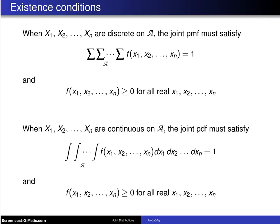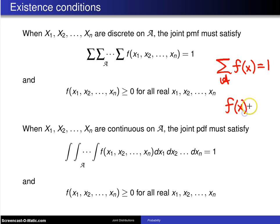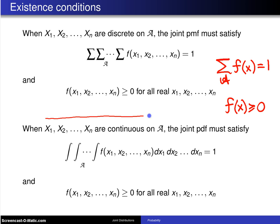The joint probability mass function and joint probability density function must satisfy certain existence conditions, as given on this slide. Recall in the one-dimensional case for discrete random variable x, the sum over the support of f of x had to equal 1, and f of x had to be greater than or equal to 0 for all x. The analogous conditions here are: when x1 up to xn are discrete on the support A, the n-fold summation of the joint probability mass function must equal 1, and the joint probability mass function must be greater than or equal to 0 for all real x values.